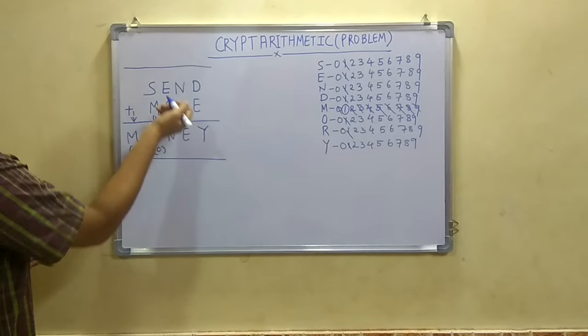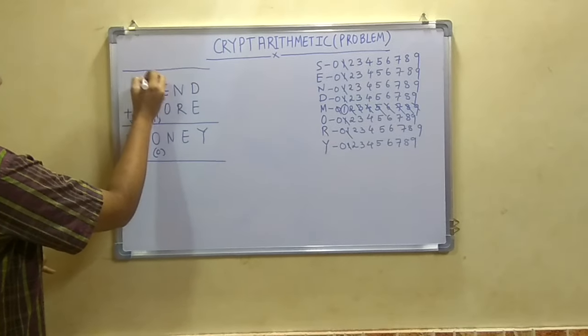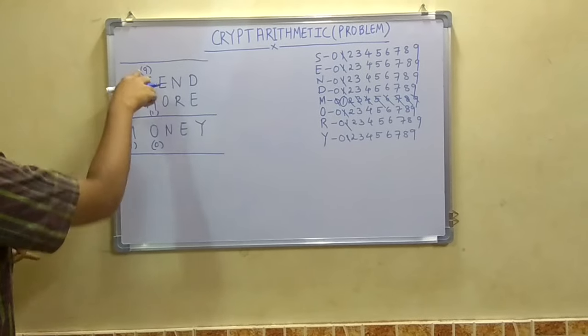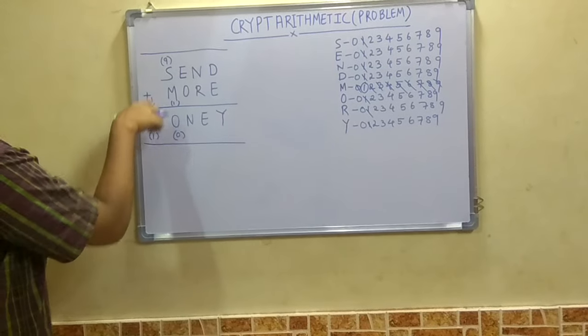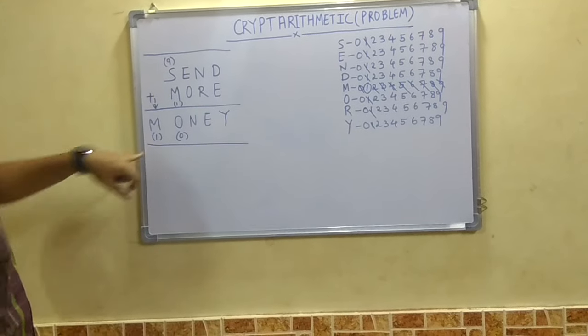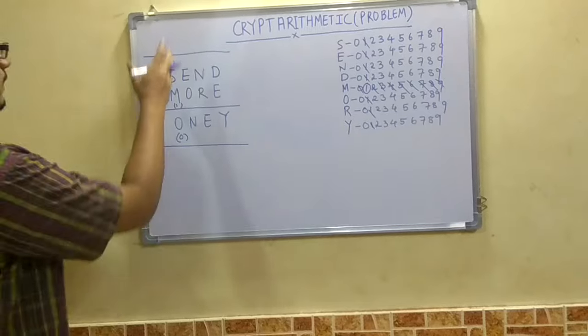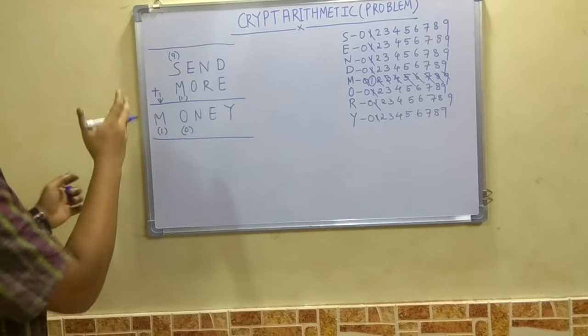Now for this thing to be 0, we have to assign S as 9. It's like 9 plus 1 gives you 10. That is 0 of the units place. And 1 should be carried here. So this equation is somewhat solved. Half part is solved.